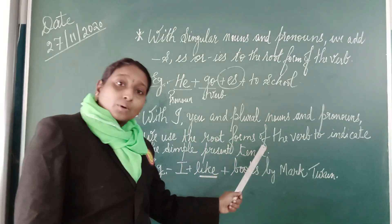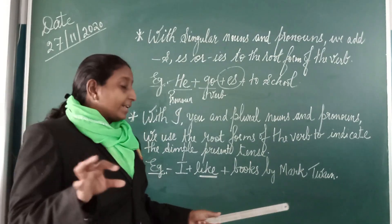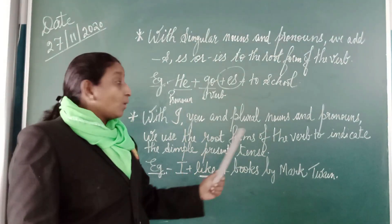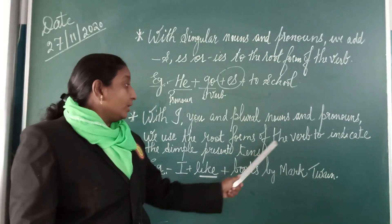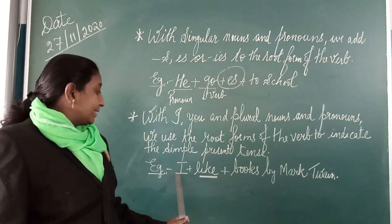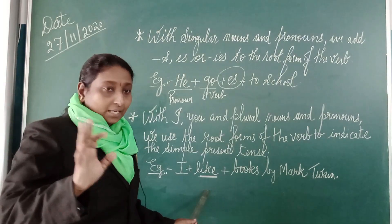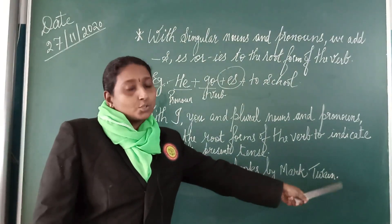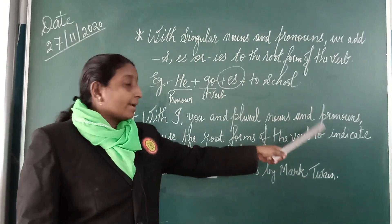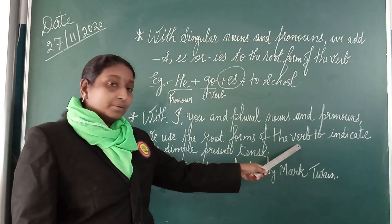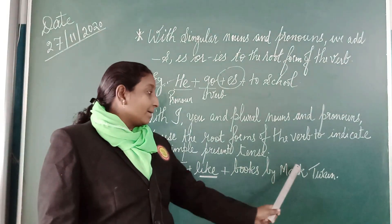With I, you, or with plural nouns and pronouns, we use the root form of the verb to indicate the simple present tense. Whenever you use I, you, or a plural noun or pronoun, and whenever there is a root form of the verb, we use it in a simple present tense. So here the example is: I like books by Mark Twain. We don't add S — we use the root form of the verb.